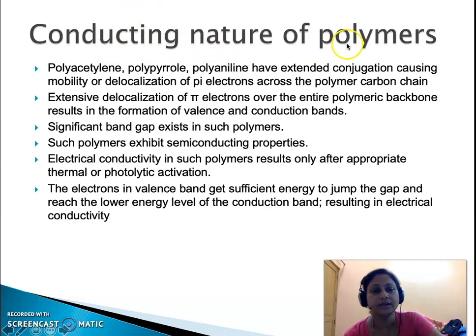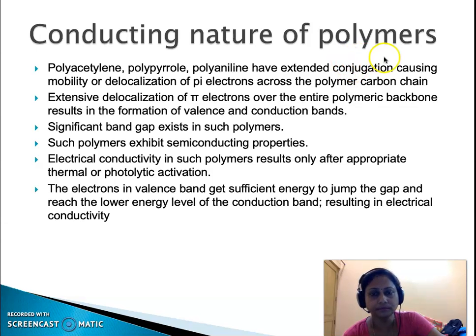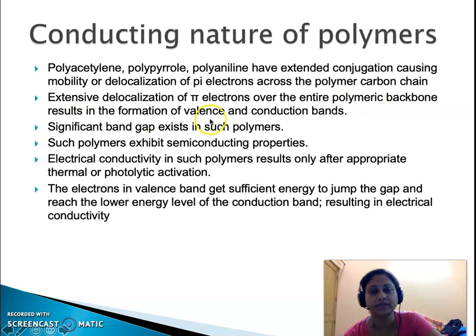What makes certain polymers conduct? The first criterion is extensive conjugation — the presence of double and single bonds in continuation. This conjugation causes the mobility or delocalization of pi electrons across the entire polymer carbon chain. Examples of such polymers with extensive conjugation are polyacetylene, polypyrrole, and polyaniline. The extensive delocalization of pi electrons over the entire polymeric backbone results in the formation of a valence band and a conduction band, but there is still a significant band gap that results in semiconducting properties.